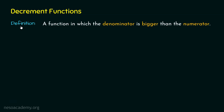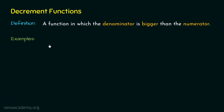Here comes the definition of a decrement function. A function in which the denominator is bigger than the numerator is called a decrement function. Here are some examples: C over N is a decrement function because N is bigger than C. Assuming C is some constant and N represents the size of the input, as N approaches infinity, the constant becomes negligible — N is greater than the constant. So C over N is a decrement function.